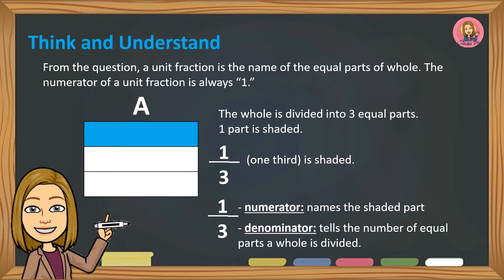The whole is divided into three equal parts. One part is shaded. So, one third is shaded.